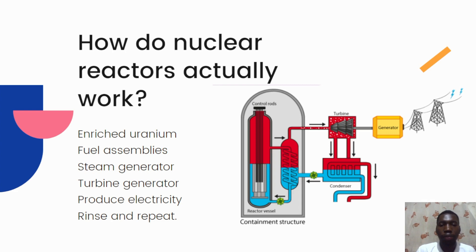So you should get the step-by-step process: we have the enriched uranium, which is the fuel used to power the nuclear reactor. We have fuel assemblies, and we have a steam generator. The steam generator is then used to drive a turbine generator that produces electricity. This process is repeated to produce more and more electricity.